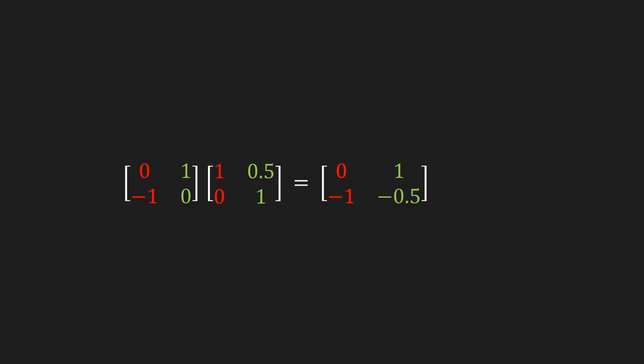There are some important things to keep in mind when multiplying matrices. First, the number of columns in the left matrix must equal the number of rows in the right matrix — if not, the matrices cannot be multiplied. Second, the number of rows in the left matrix equals the number of rows in the resulting matrix, and similarly the number of columns in the right matrix equals the number of columns in the final matrix.